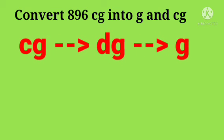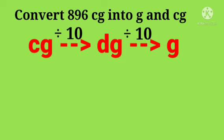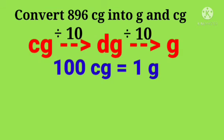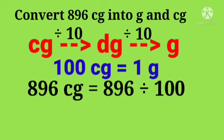Convert 896 centigram into gram and centigram. We have centigram, decigram, and gram divided by 10 in all the steps. So, as a result, we get 100 centigram is equal to 1 gram.